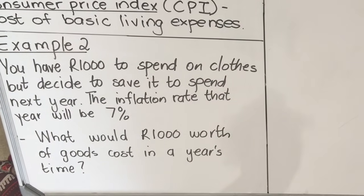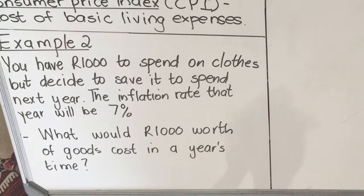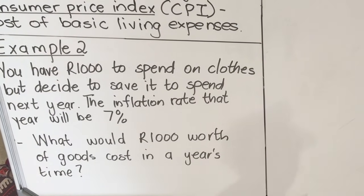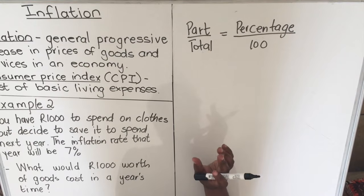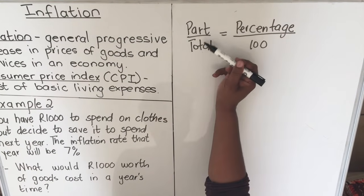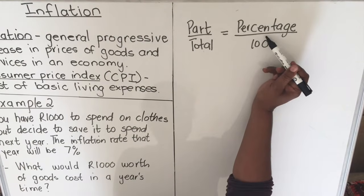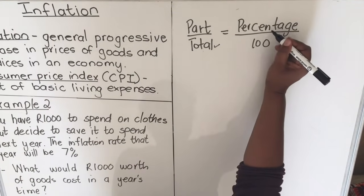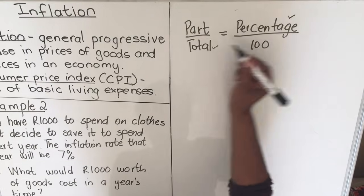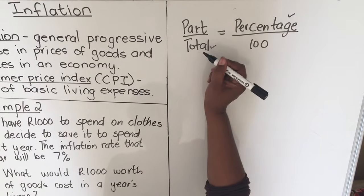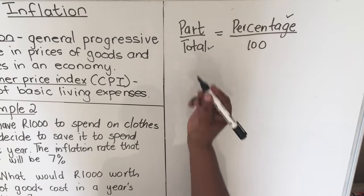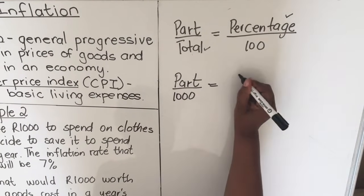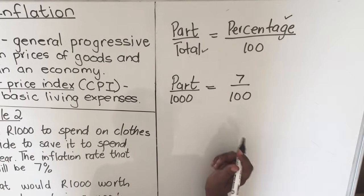We need to calculate what 7 percent of 1000 is — the price will be 7 percent more the following year. Using our percentage formula: part divided by total equals percentage divided by 100. We are given the total which is 1000 and the percentage which is 7 percent. So: part equals 1000 times 7, divided by 100.